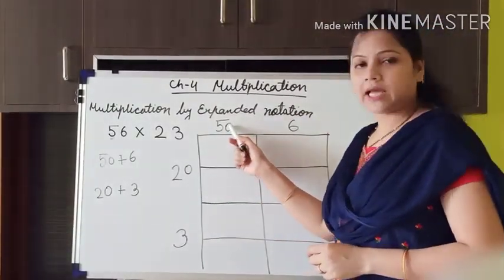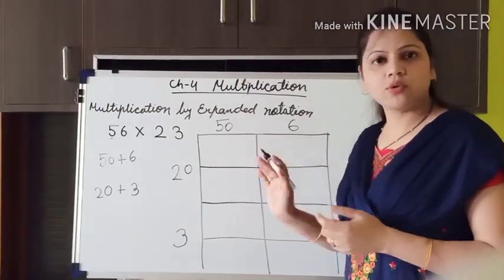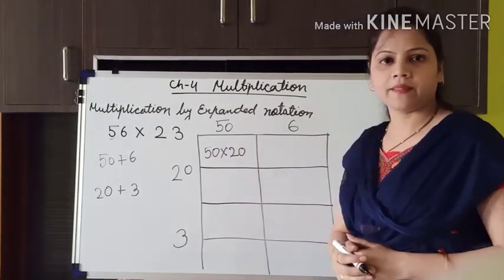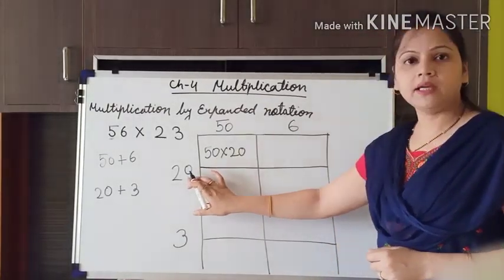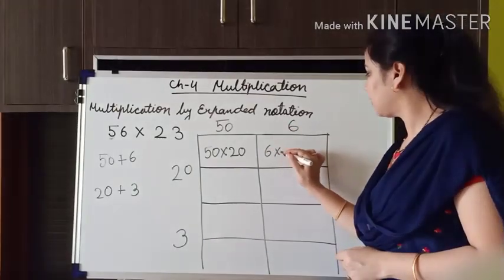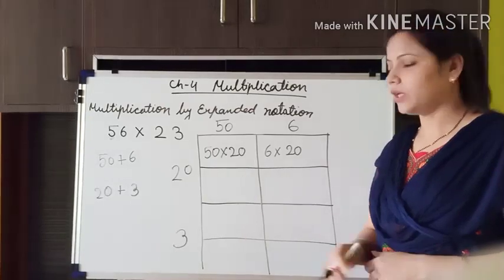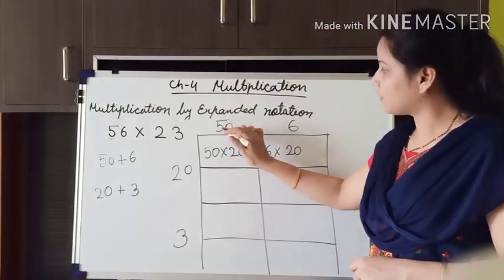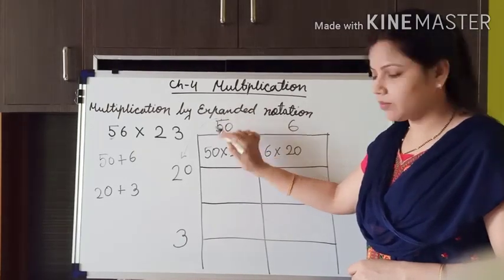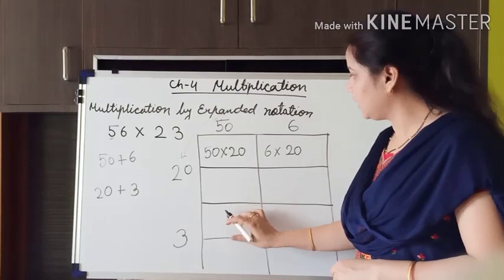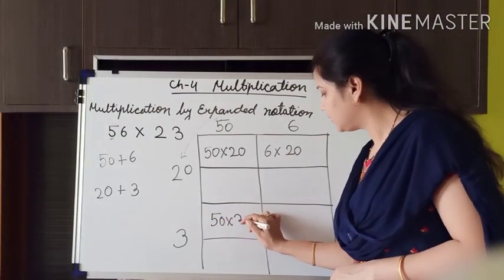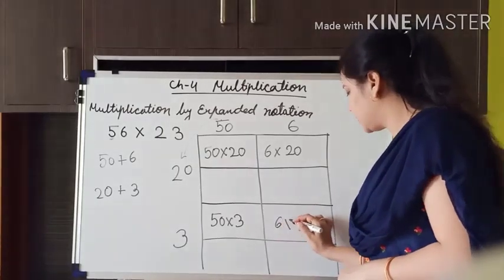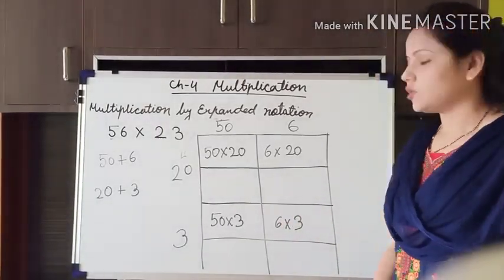Now we have to multiply each number. So first we are going to arrange: 50 multiplied by 20, and 6 multiplied by 20. In these places we will write the answers. After that, we also have to multiply these numbers by the other row: so here we write 50 multiplied by 3, and 6 multiplied by 3. Now all the numbers are arranged — according to that we have to now multiply.